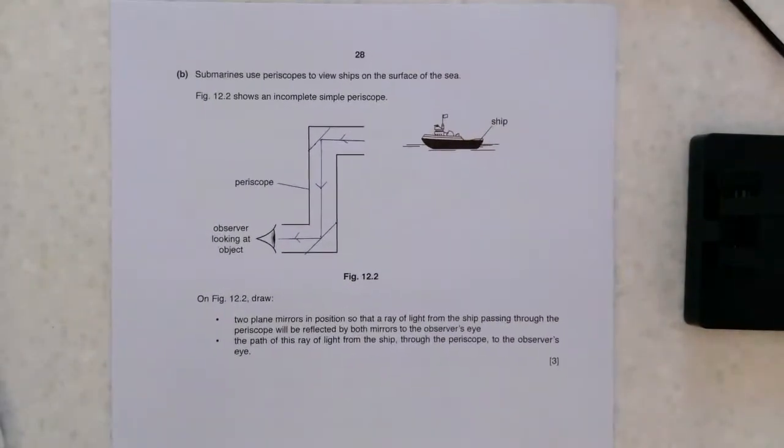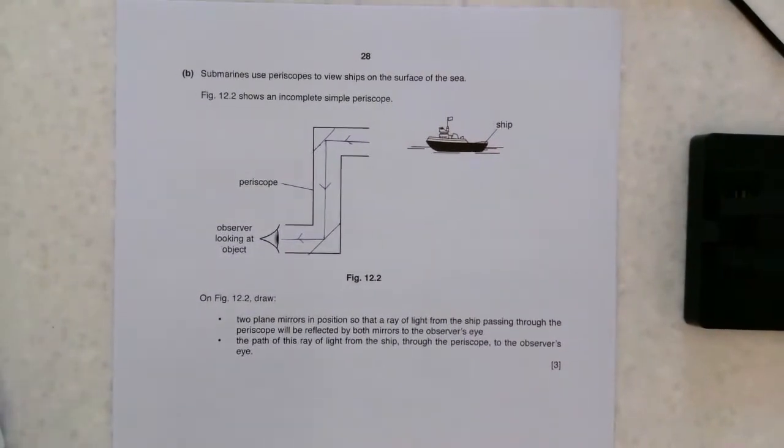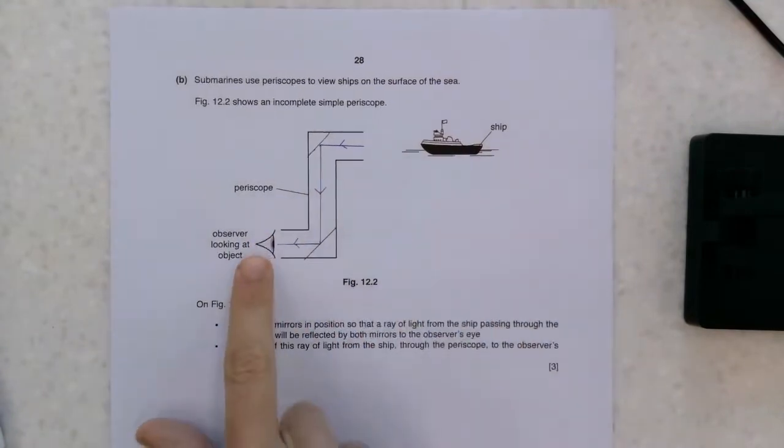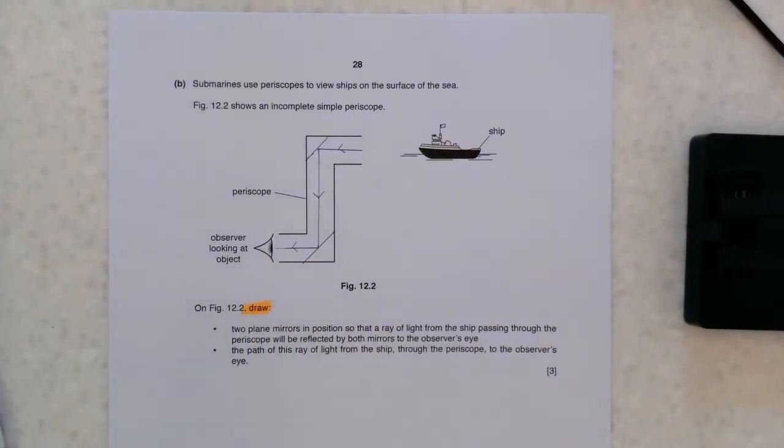We then go on to talk about reflection. Make sure you're drawing here because this is the kind of thing that people look at. They don't really understand what they're doing. We've got a ship up here and we've got an object looking at it through our periscope. Obviously, I'm sure some of you have used these before. We're using reflection so that the light can travel down here.